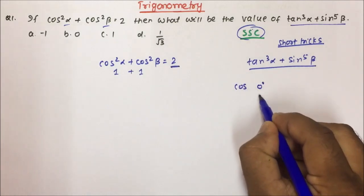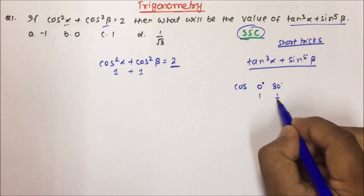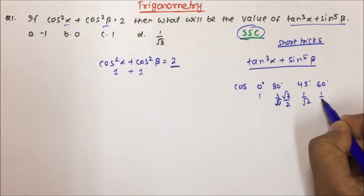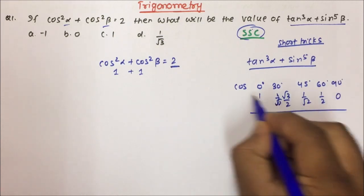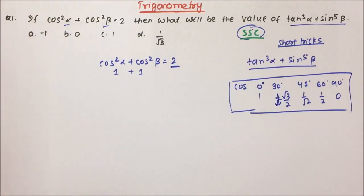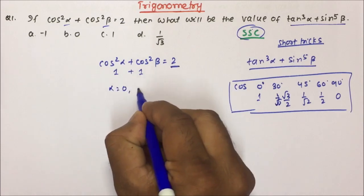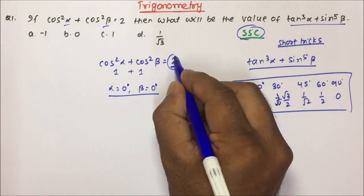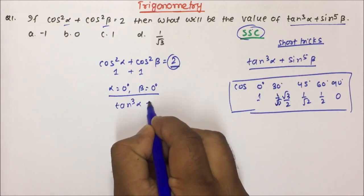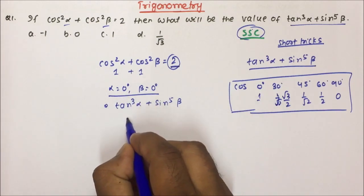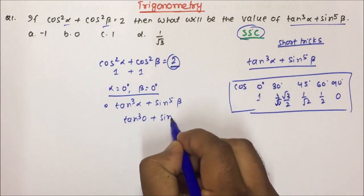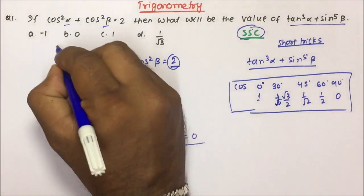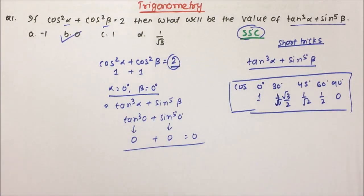We know cos 0° = 1, cos 30° = √3/2, cos 45° = 1/√2, cos 60° = 1/2, and cos 90° = 0. This has already been discussed in the basic videos, so I suggest you watch those as well. If we want cos²α = 1 and cos²β = 1, then alpha = 0° and beta = 0°. Now we calculate tan³0° + sin⁵0°: tan 0 = 0 and sin 0 = 0, so 0 + 0 = 0. Your answer is option B.